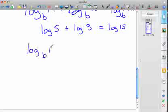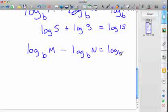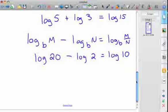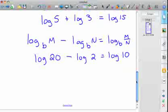So let's say you had log b of M minus log b of N. That is log base b of M divided by N. It could be combined into one logarithm. So if you had the common log of 20 minus the common log of 2, that would be the same as the common log of 10. All right. So there's the third thing you need to know.